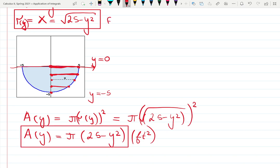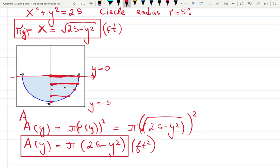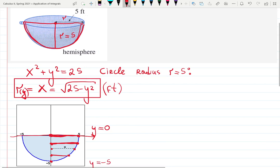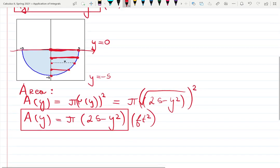This was the area of the circle. Now, those are my slices. Here's a 3D picture. Those are my horizontal slices. They do have thickness. And we just figured out that the area of those slices is changing.